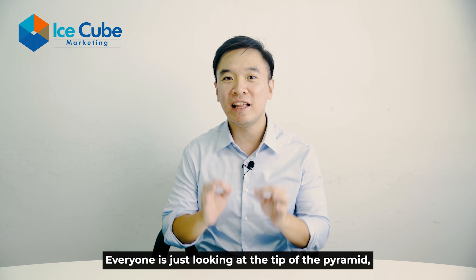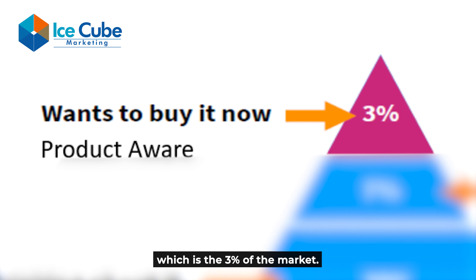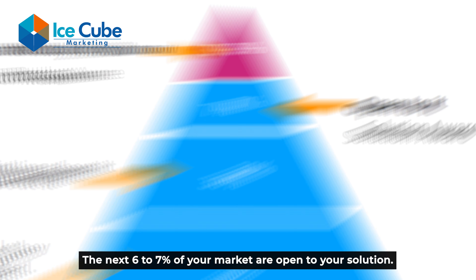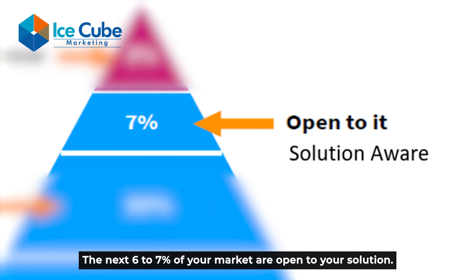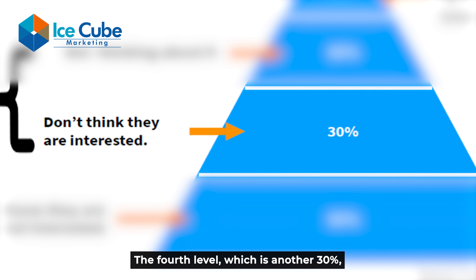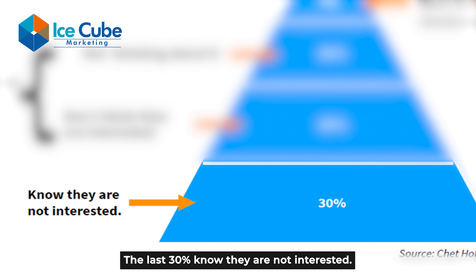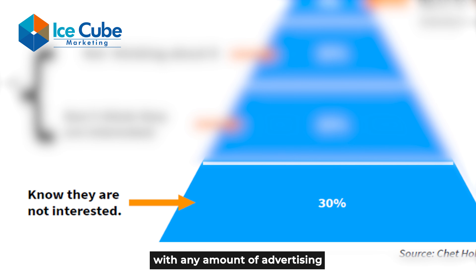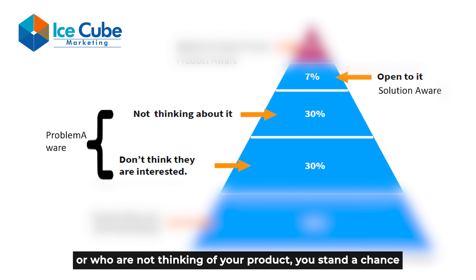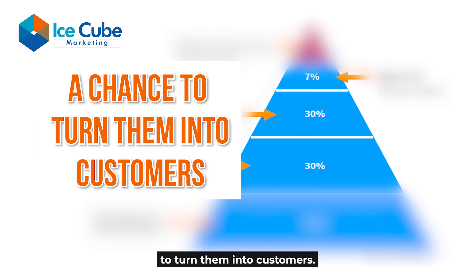Everyone is just looking at the tip of the pyramid — the 3% of the market — and neglecting the 67% of the market. The next 6% to 7% are open to your solution. The next 30% are not thinking about your product. Another 30% don't think they are interested. The last 30% know they are not interested — you can forget about them. But you still have 67% of the market that is untapped, and you stand a chance to turn them into customers.